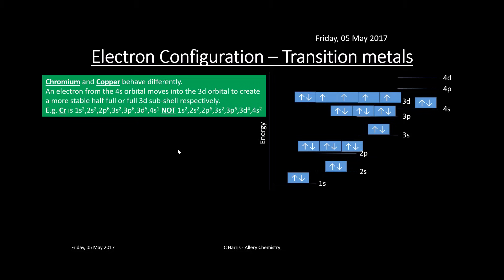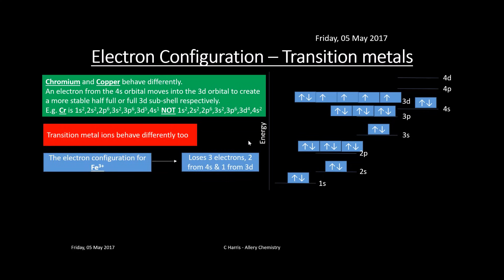Transition metals behave differently — be careful with chromium and copper in particular. An electron from the 4s orbital moves into the 3d orbital to create a more stable half-full or full 3d subshell respectively. For chromium, the electron configuration is 1s² 2s² 2p⁶ 3s² 3p⁶ 3d⁵ 4s¹ — an electron from 4s has moved into 3d to create a half-full subshell, which is more stable.